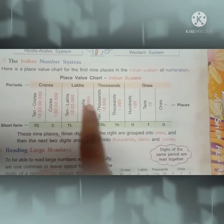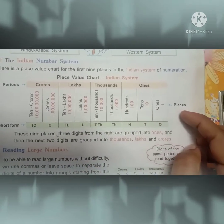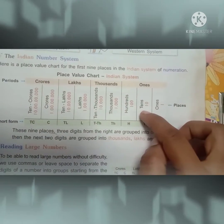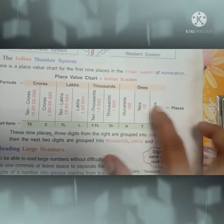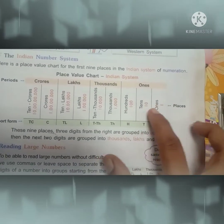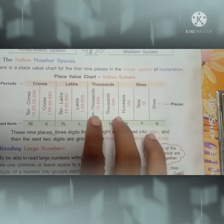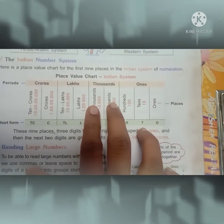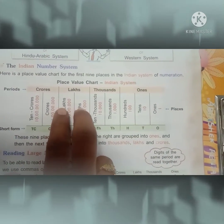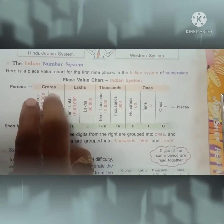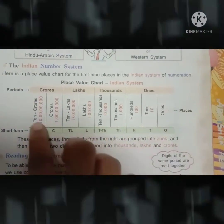In the Indian system, the first three digits from the right are grouped into the ones period — ones, tens, hundreds. Then the next two digits are grouped into thousands. Again, the next two digits are lakhs, and again two digits are crores. This is the chart.